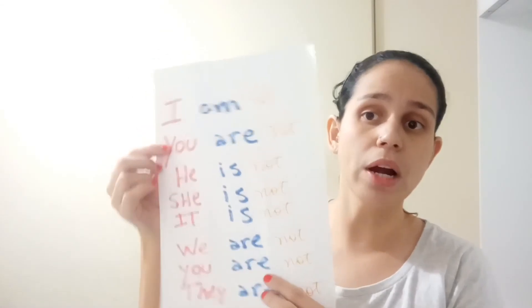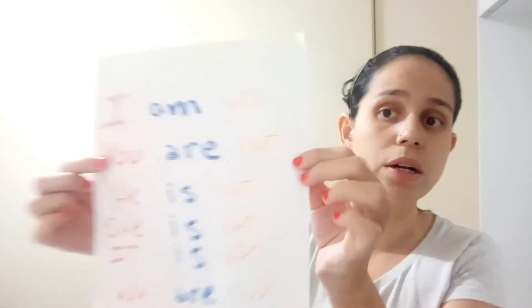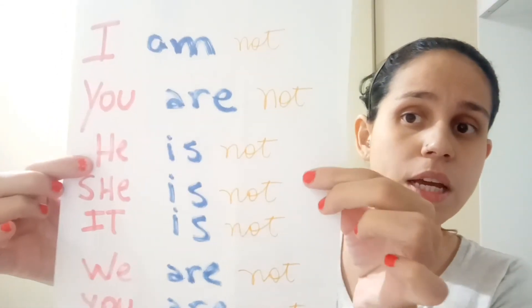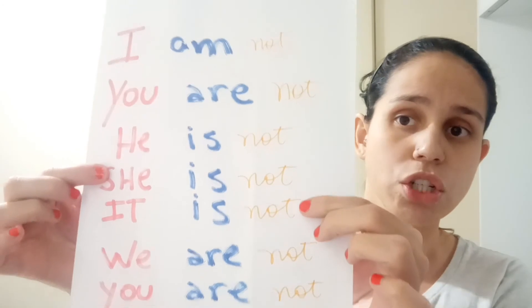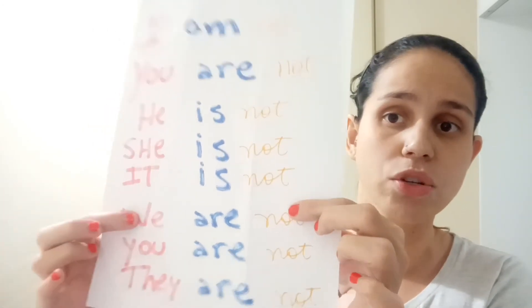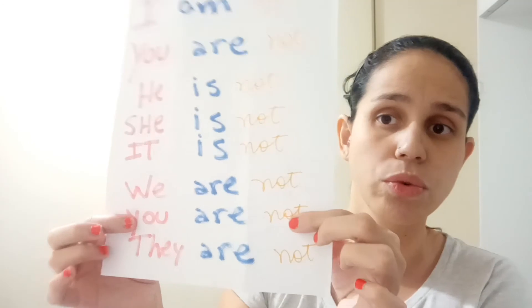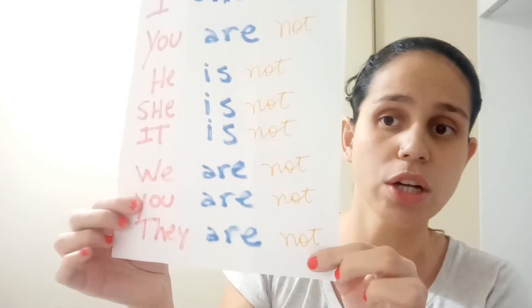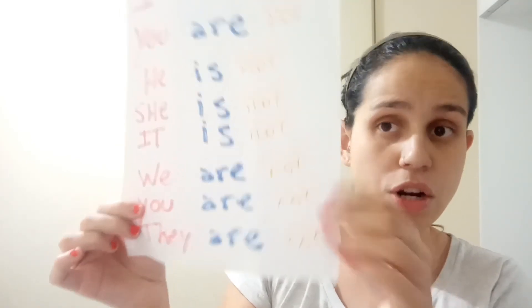To make the negative of the verb to be, we only put 'not'. So: I am not, you are not, he is not, she is not, it is not, we are not, you are not, they are not.